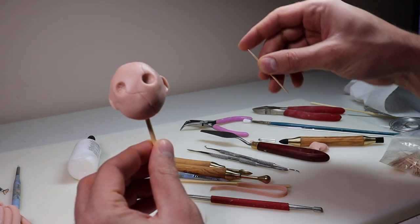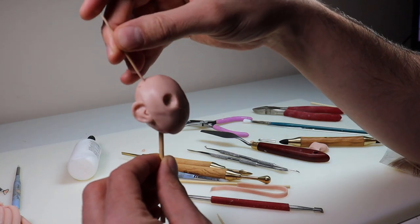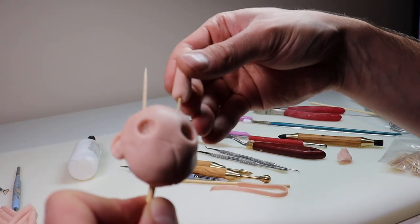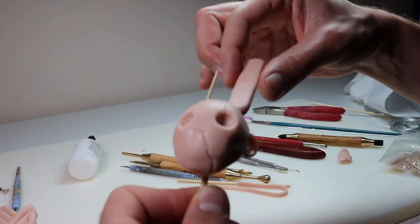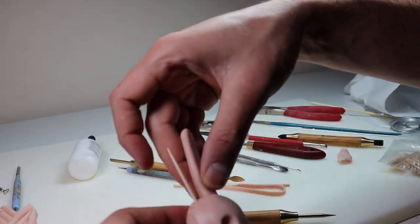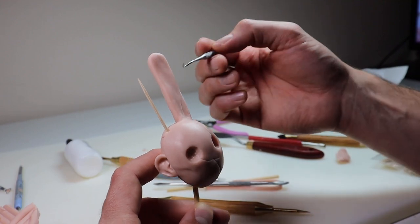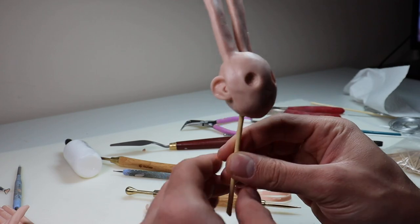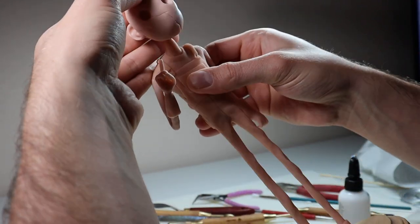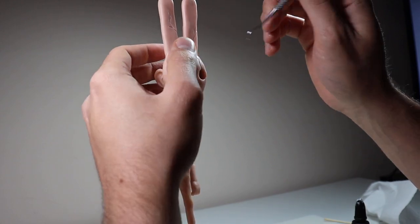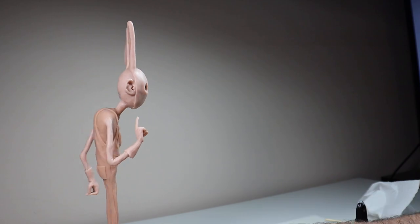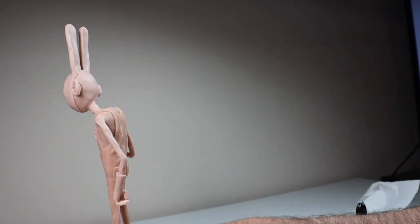All right now for the ears I'm going to stick in a couple toothpicks to support those. All right there we go we got our creepy bunny mask on this guy. Let's go ahead and add it to the body. All right there we go looks pretty good exactly how I want him to actually. Now let's pop him in the oven, bake him, come back do his hair and then we can bake him one last time and paint.